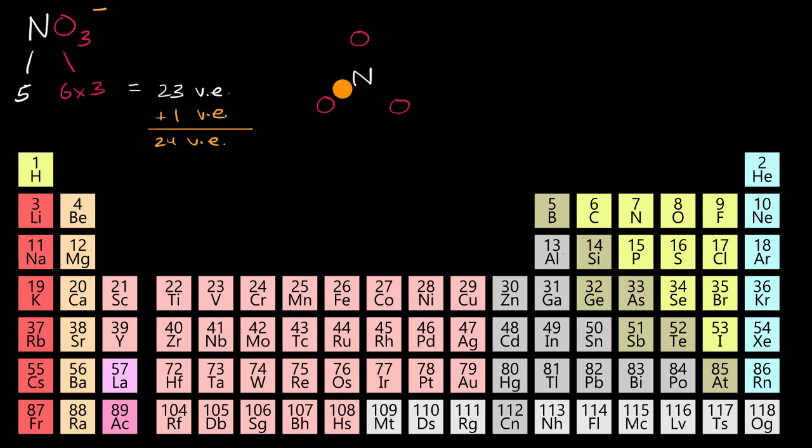Let's put a single bond between them. So far we have accounted for two, four, six valence electrons. Minus six valence electrons gets us to 18 valence electrons. The next step is we would try to allocate as many of these as possible to our terminal atoms, the oxygens, try to get them to a full octet.